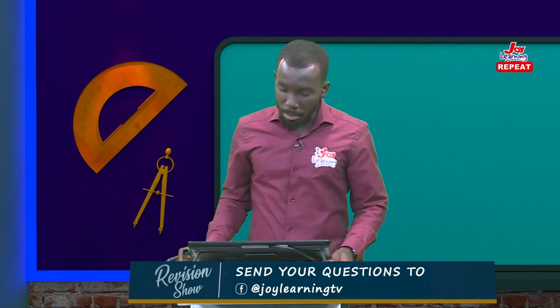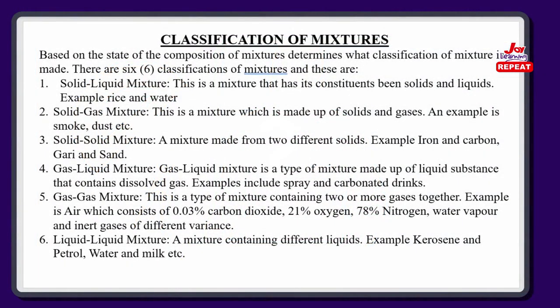Another one is solid-solid mixture — a mixture made from different solid materials or components. An example is an alloy of iron and carbon. You may also have gari and sand; I'm sure you've all seen gari and sand before. When gari and sand are mixed together, it gives you a solid-solid mixture. In the same way, salt and sand is also another clear example of a solid-solid mixture.